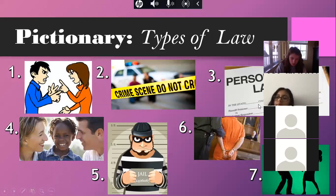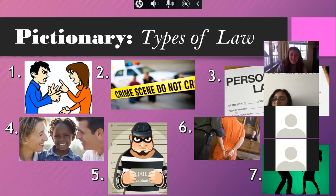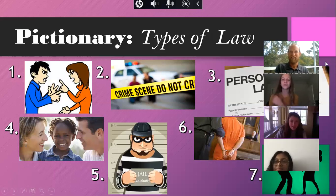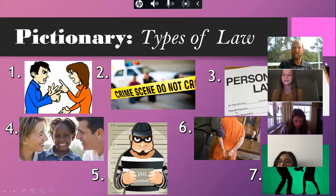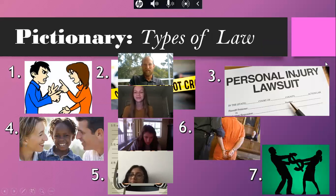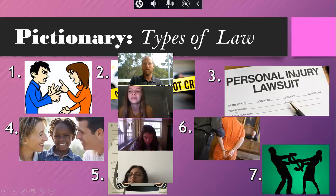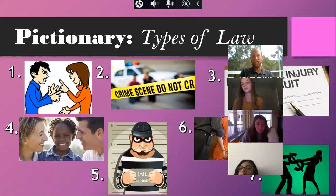Continuing the pictionary. Number five shows a mugshot - criminal law. Number six shows an arrest scene - criminal law. Number seven shows people arguing over money - civil law, possibly a dispute like divorce, which falls under family law as a type of civil law.